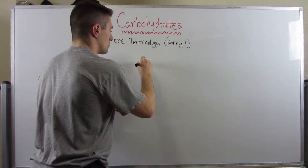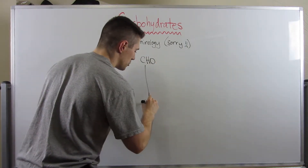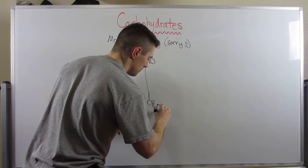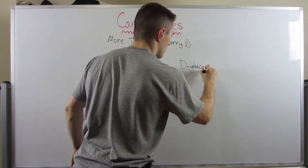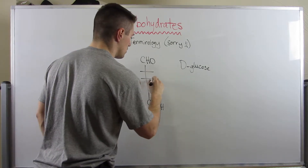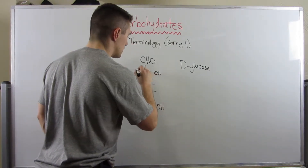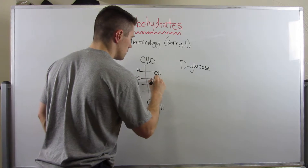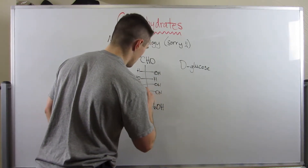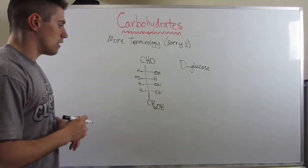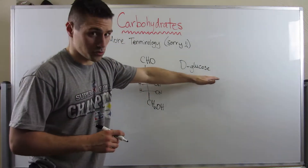So real quick, I'm going to draw just the Fischer projection of D-glucose. Remember, it looks like this: OH on the right, OH on the left, OH on the right. This arrangement is what makes glucose glucose.